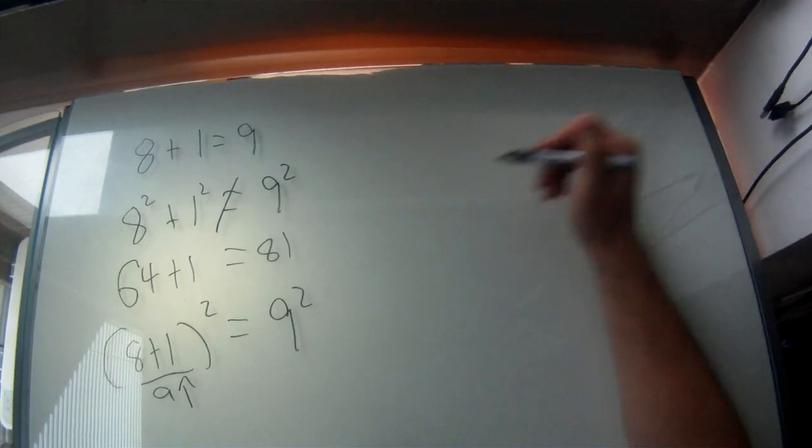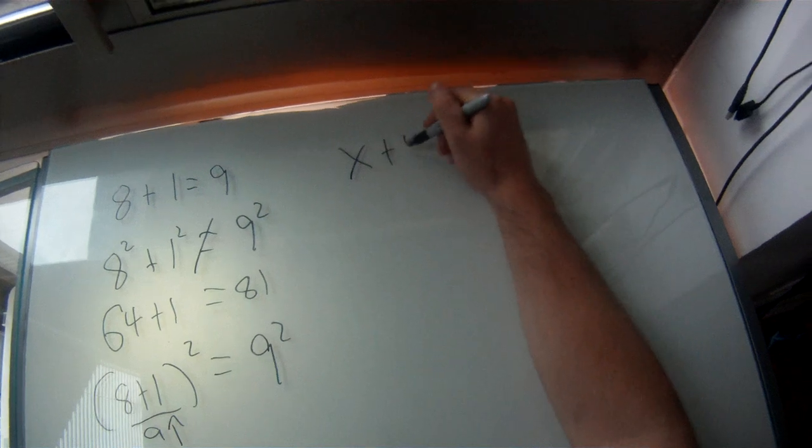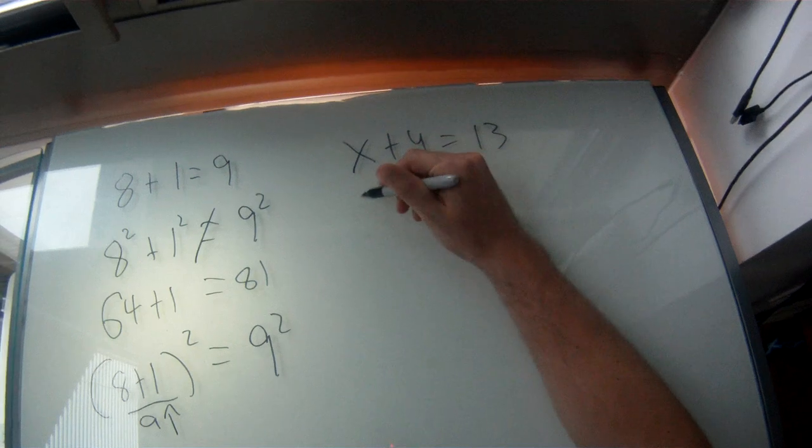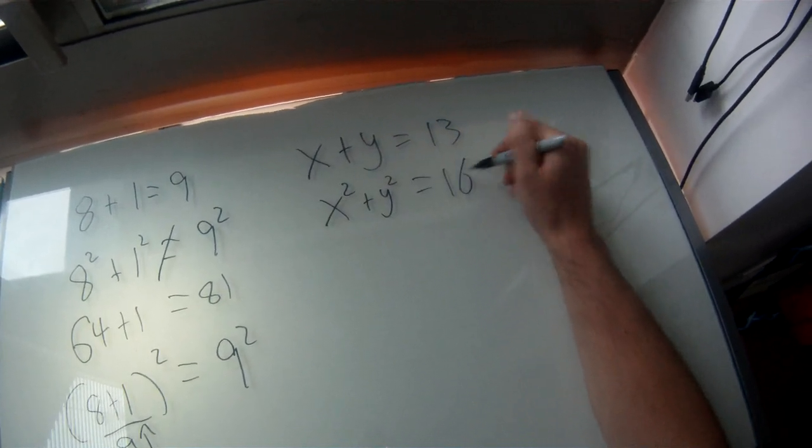So it's a little bit less obvious when you're seeing things with a variable. So for instance, you have x plus y equals 13. And when you square both sides, everyone wants to say, okay, well sure, x squared plus y squared equals 169.